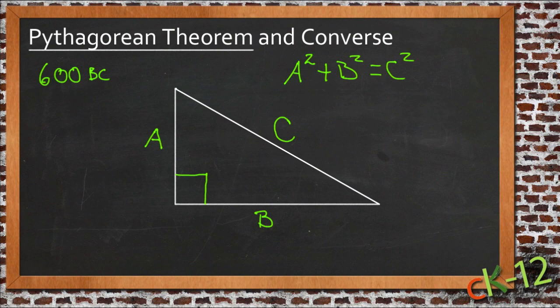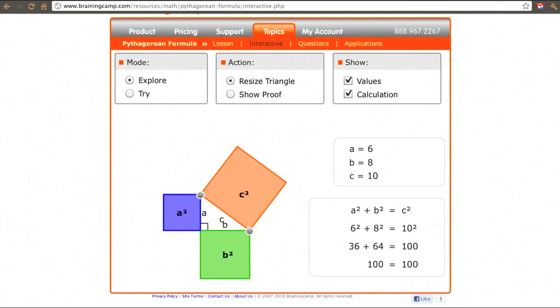Now, what I wanted to show you was a little manipulative. I went ahead and put in values for A, B, and C in a triangle here, where A, the short side, is 6 units long, and B, the medium side, is 8 units long, and then C, the long side, will be 10 units long.